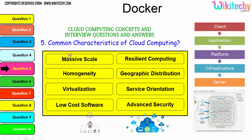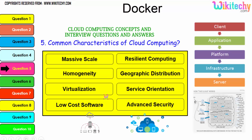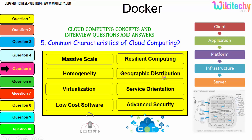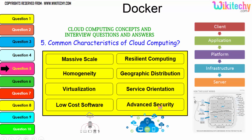Let's talk about the common characteristics of cloud computing. Massive scale — however big you want, it can be provided. Homogeneity — you can use homogeneous resources. Virtualization — you can create virtual machines and use them. Local software becomes much cheaper with remote computing, so whatever processing is done remotely, you don't face disturbances. Geographic distribution — the data and computing processes are geographically distributed. Service orientation and advanced security are also key characteristics.